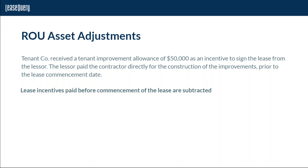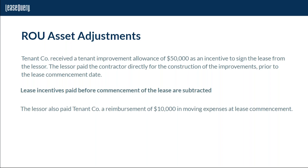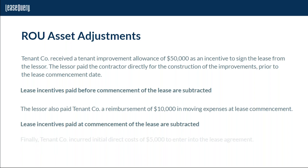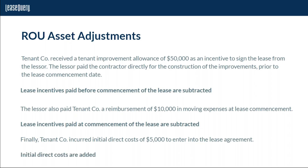Lease incentives paid at or before commencement are included in the right of use asset calculation — they are subtracted from the lease liability. So the $50,000 tenant improvement allowance paid to the contractor on behalf of the lessee is subtracted. The $10,000 reimbursement for moving expenses paid at commencement is also a lease incentive and is also subtracted. Initial direct costs of $5,000 are an adjustment to the right of use asset and are added.